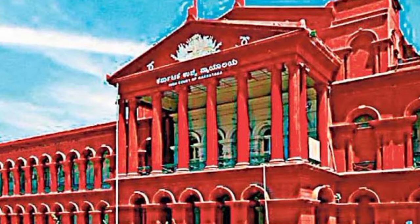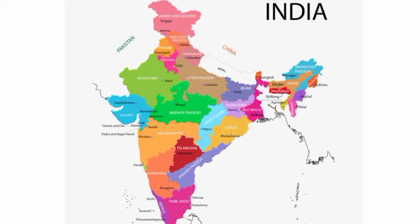The constitution provides for a High Court in every state. Sometimes there is one High Court for two or more states. The High Court consists of a Chief Justice and other judges. The number of judges varies from state to state.